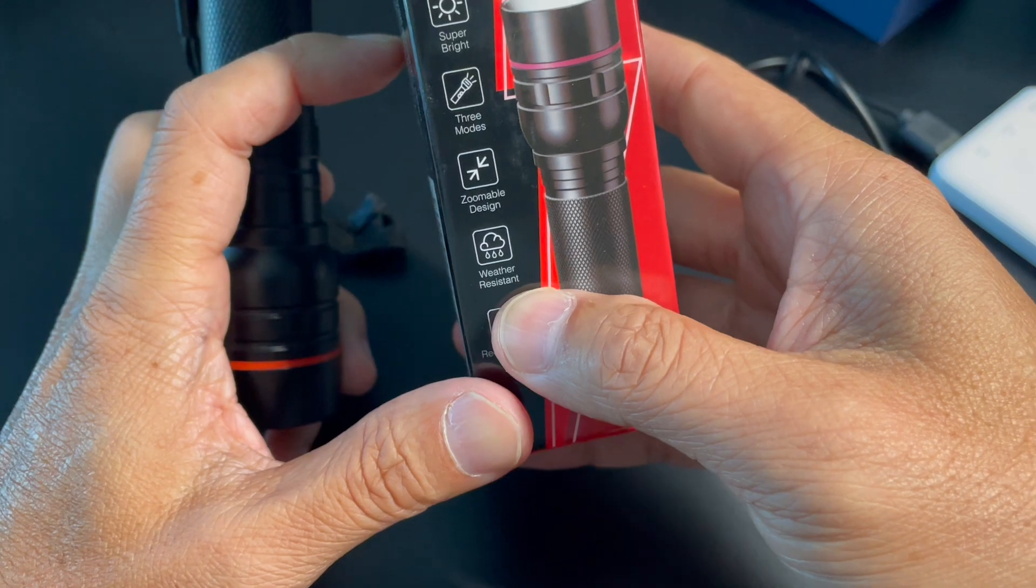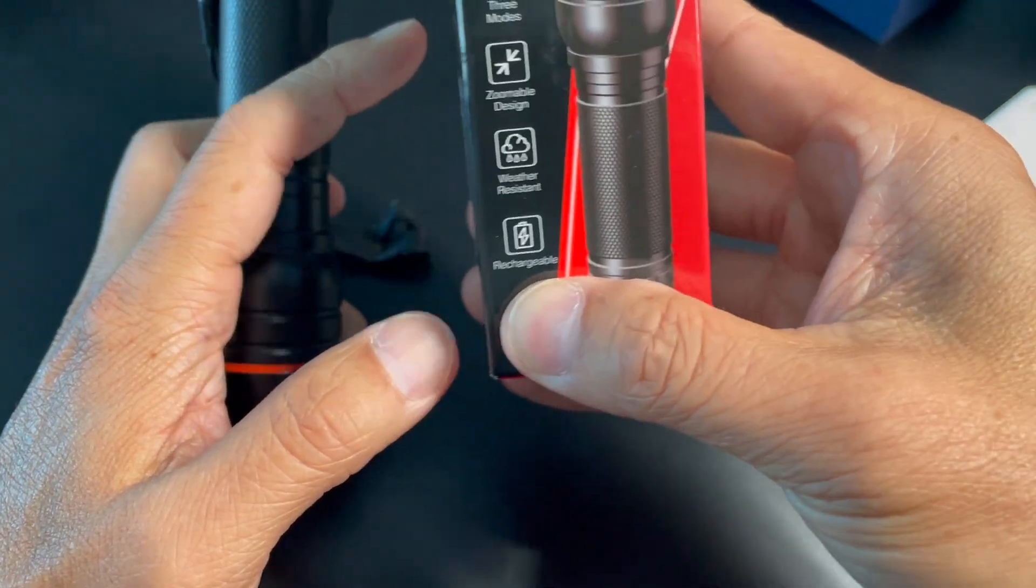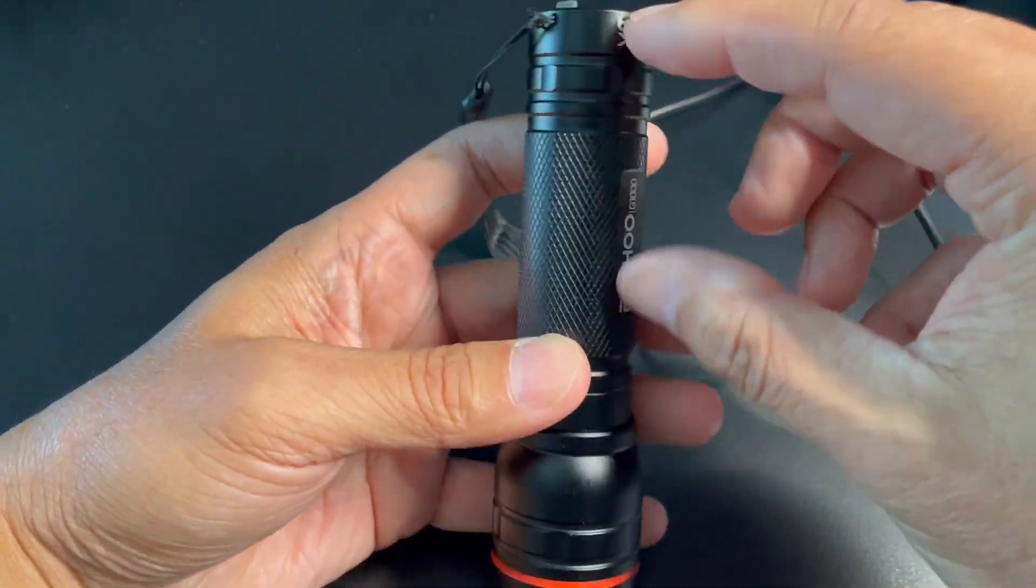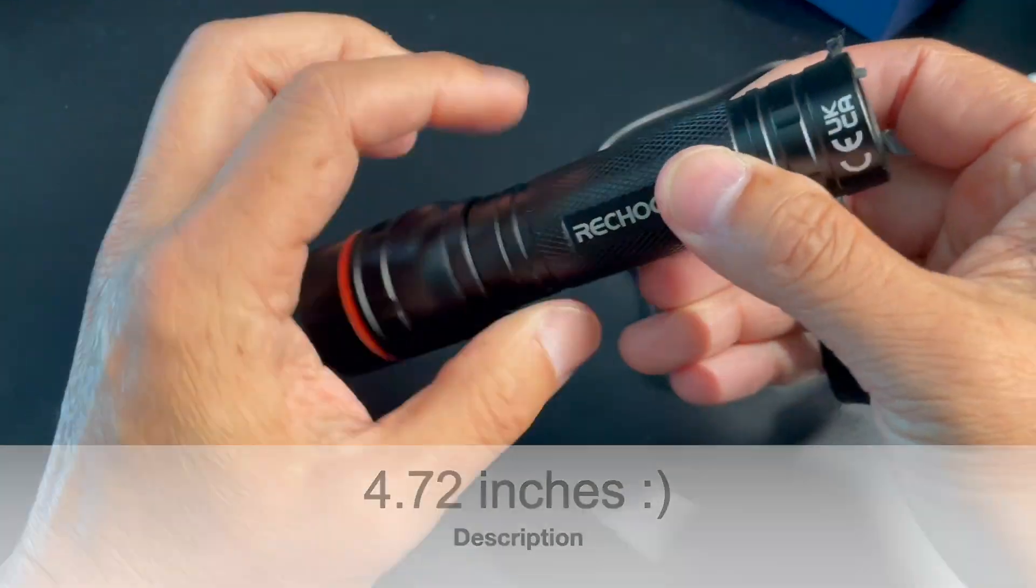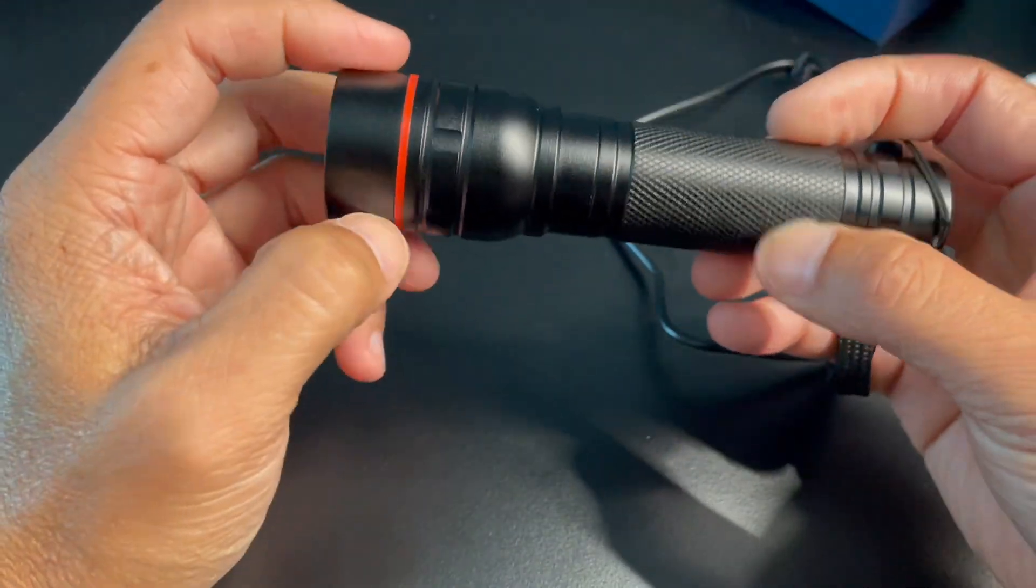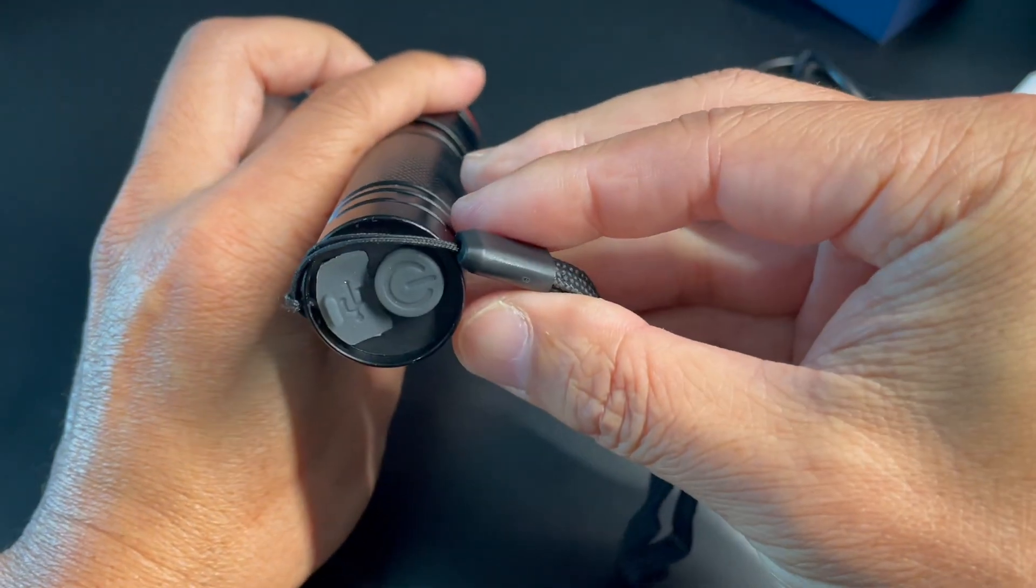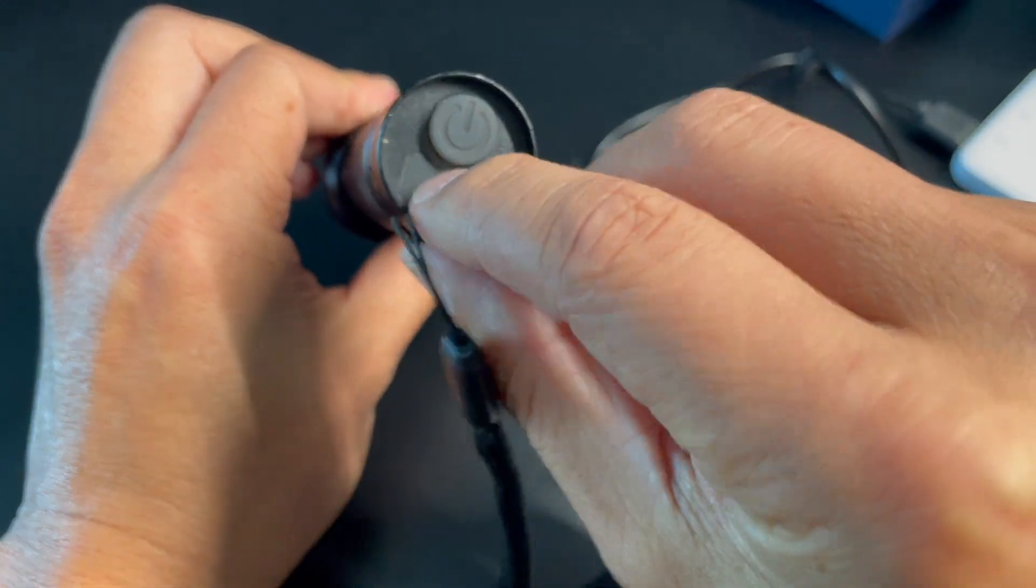And then it's weather resistant. Don't know what that means, don't know what kind of IP rating it has, and it's rechargeable. This is it right here. It's about three and a half, four inches, pretty standard design. Looks like you could drop it and it won't break.